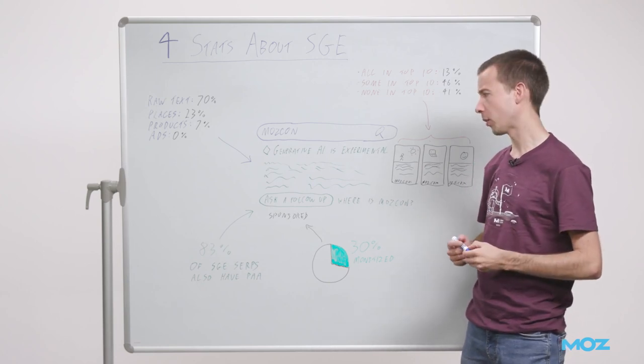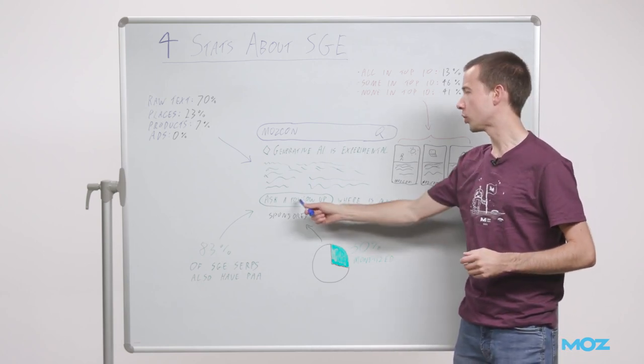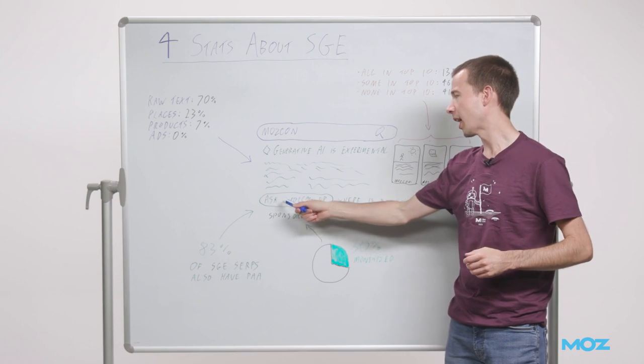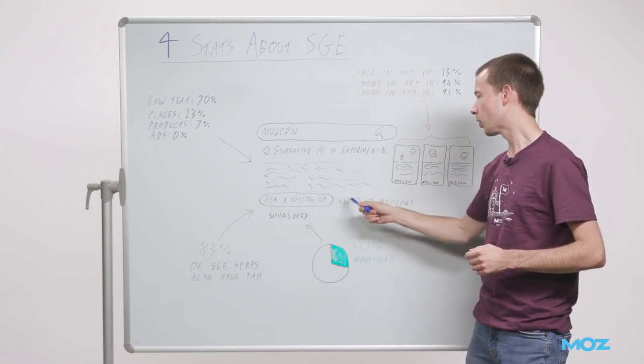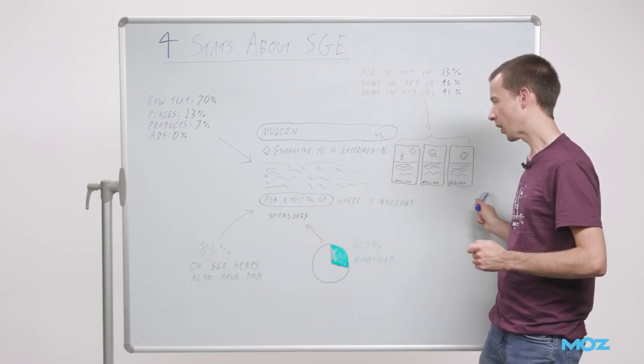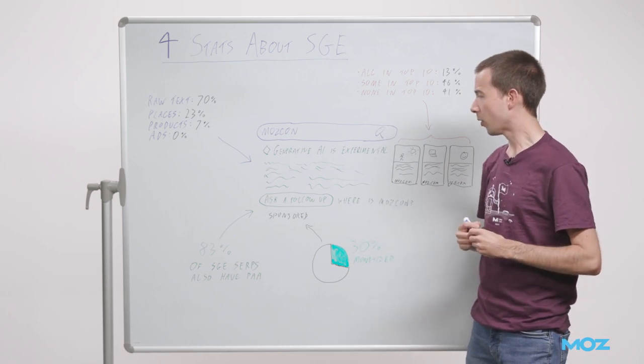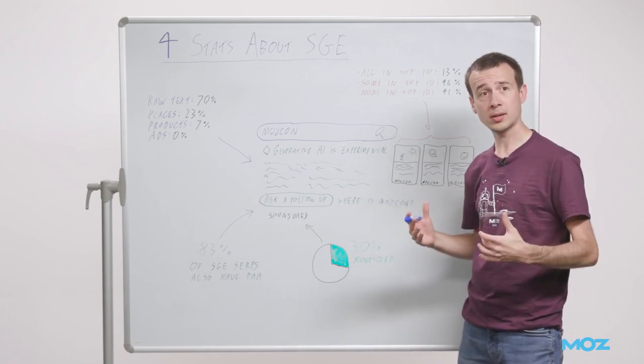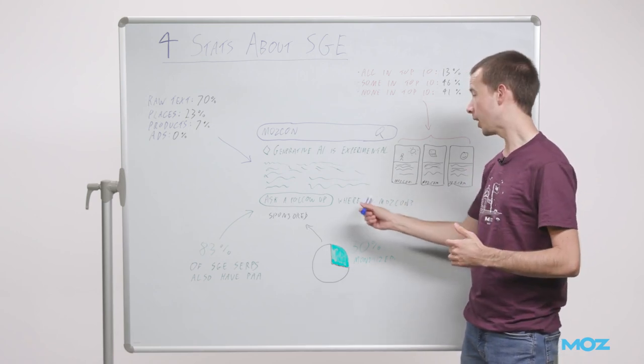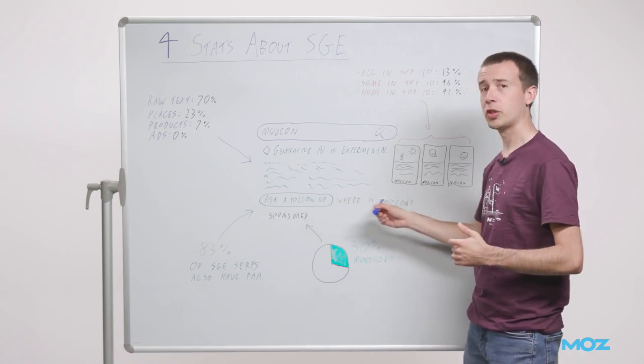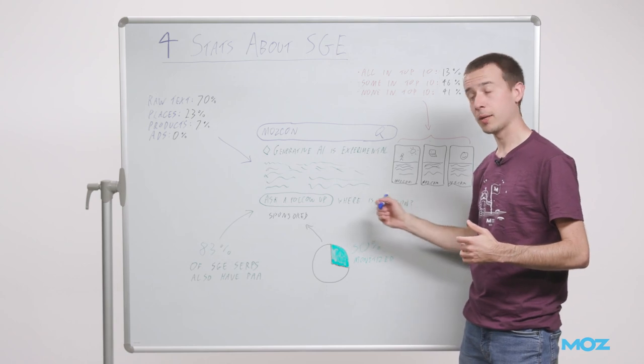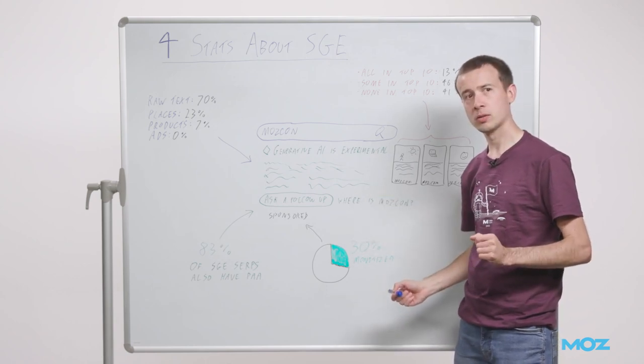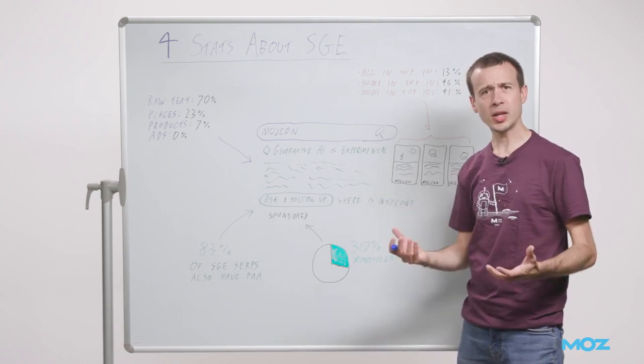The third stat I want to share is about these questions. You've got, as I said, ask a follow-up and some suggested questions. Now, these look a bit like People Also Ask questions, and indeed, often the questions you see here will also appear in a People Also Ask box further down. I think that's a bit odd.